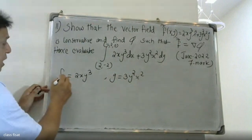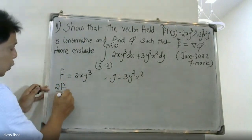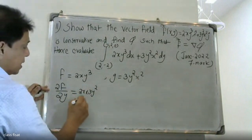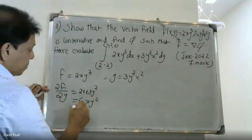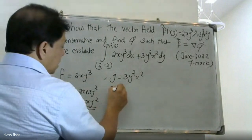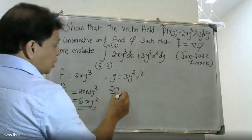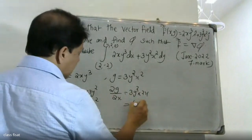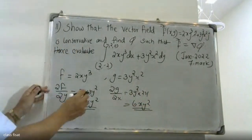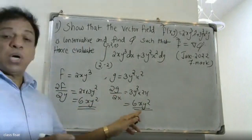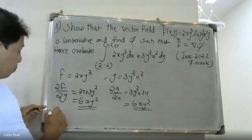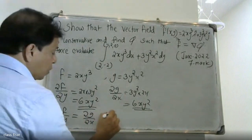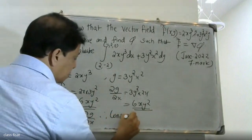To check if the field is conservative, we differentiate. We differentiate the i-component with respect to y, which gives 6xy². Then we differentiate the j-component with respect to x, and we also get 6xy².